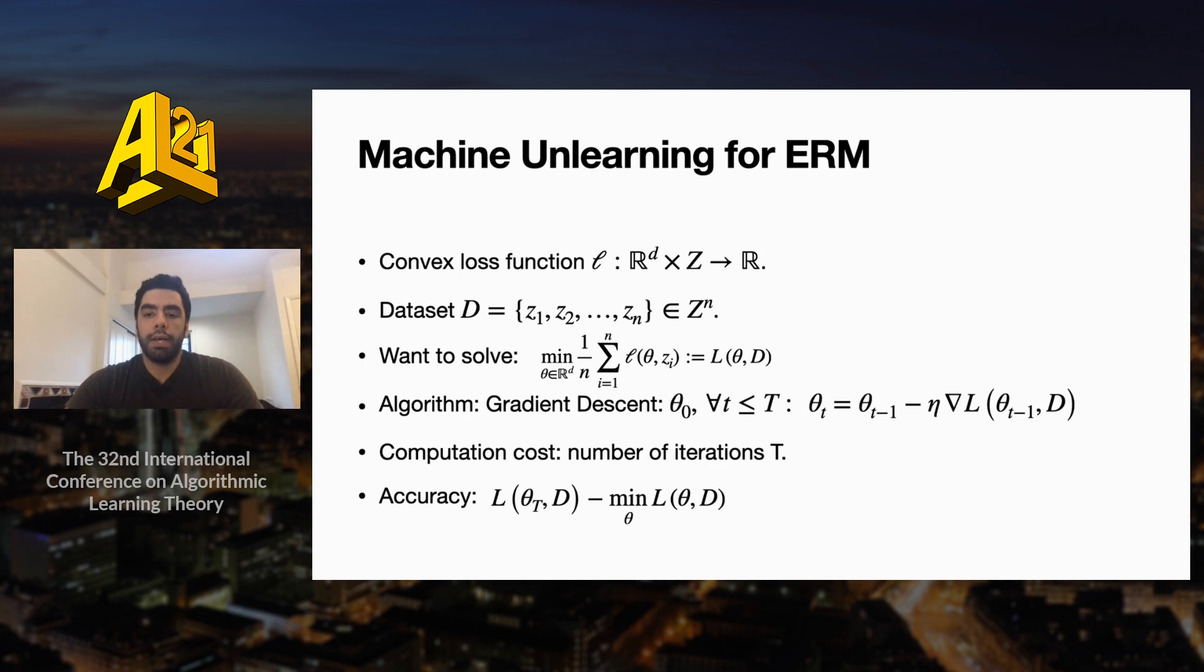A typical algorithm to use in this setting is gradient descent, which starts from an initial point in the parameter space and proceeds by iteratively taking steps in the direction of the gradient of the loss function. We measure the computation cost of gradient descent by the number of iterations, capital T, that it runs for. The accuracy for gradient descent is measured by the loss of the parameter output by gradient descent minus the minimum loss.